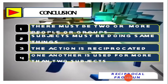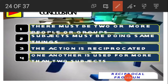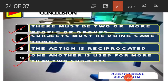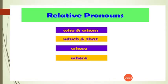To summarize reciprocal pronouns: there must be two or more people or groups; the subject must be doing the same thing — if subjects are not doing the same thing, we cannot use reciprocal pronouns; the action is reciprocated; and one another is used for more than two subjects. Now we are going to learn relative pronouns.